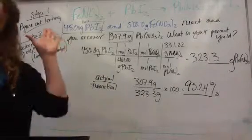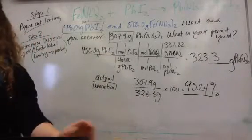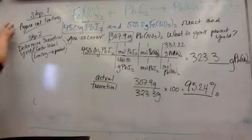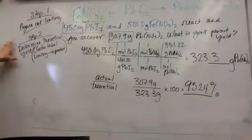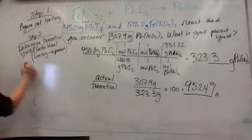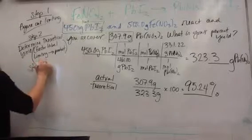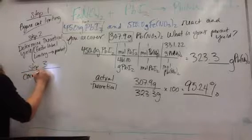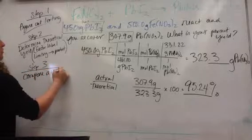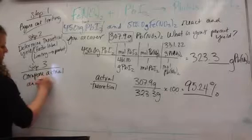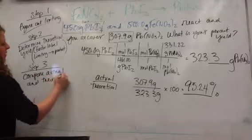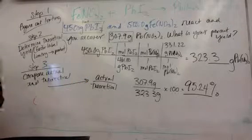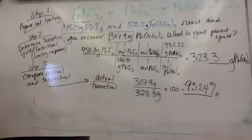It's not that hard, but remember that it's a multi-step process. So step one, figure out your limiting. Step two, determine your theoretical yield. And then step three, compare actual and theoretical. That's given to you. So that's a given.